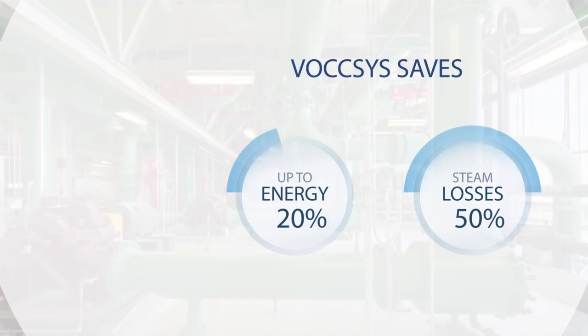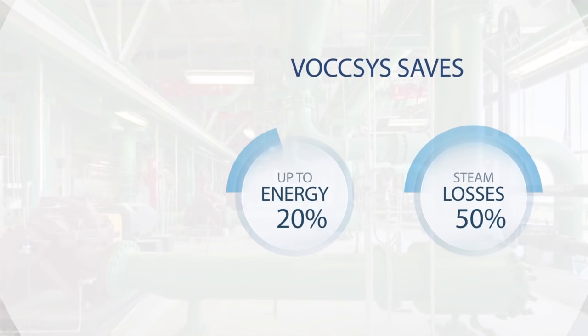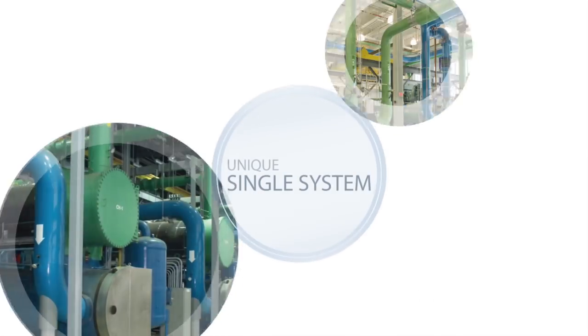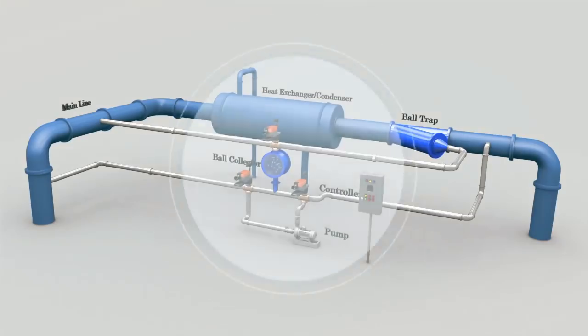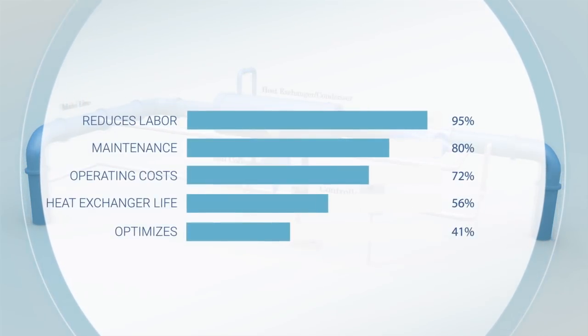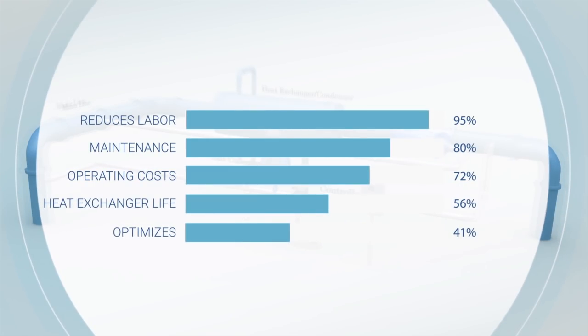BOXCS saves up to 20% energy in chillers and up to 50% steam losses in condensers. It's a unique single system for multiple heat exchangers. It reduces labor, maintenance, and operating costs, extends heat exchanger life, and optimizes heat transfer performance.